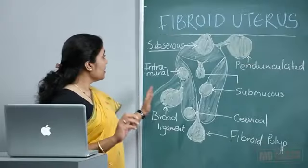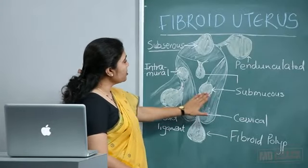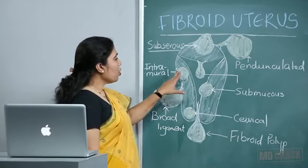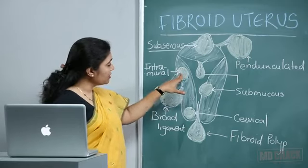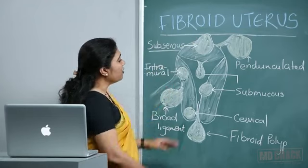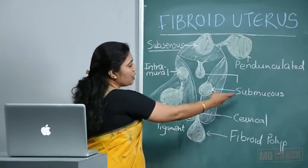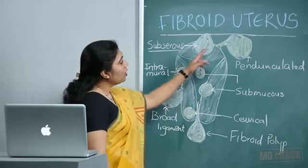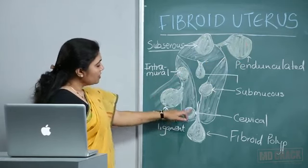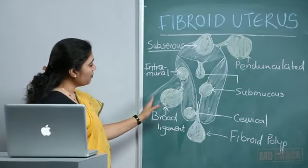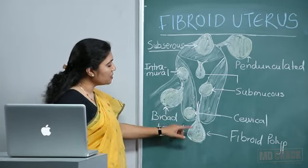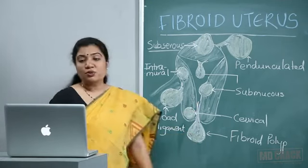Now coming to classification. As you can see, this is the uterine cavity and myometrium. Depending on position, fibroids start intramural (also called interstitial), and depending on growth: if they move towards the serosa they become subserous; if moving towards the mucosal cavity they become submucous. There are pedunculated submucous and pedunculated subserous varieties. A pedunculated fibroid may get detached and become a wandering fibroid. Cervical fibroid is found in the cervical region. Growth towards the broad ligament becomes broad ligament fibroid. A submucous fibroid may form a polyp and protrude through the external os as a fibroid polyp.